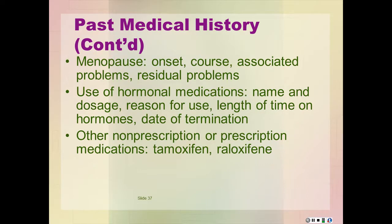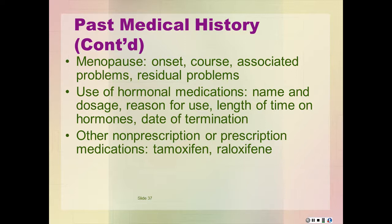Ask about menopause: when was the onset, what was the course, and were there any associated or residual problems? What medications has the patient been on? Include both prescription and non-prescription medications. Particularly ask about hormones such as estrogen and progesterone, as well as the selective estrogen receptor modulators or SERMs such as tamoxifen and raloxifene. Also the aromatase inhibitors such as anastrozole, letrozole, and exemestane.